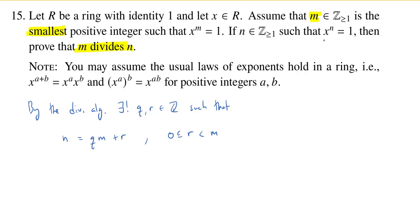Now let's use what we are given about x to the n. We know that x to the n is equal to 1. So if I take x and raise it to the n power, I get 1. But x to the n power is now the same as x to the qm plus r power. And now I can use the normal rules of exponents. I can break this up as x to the qm times x to the r.